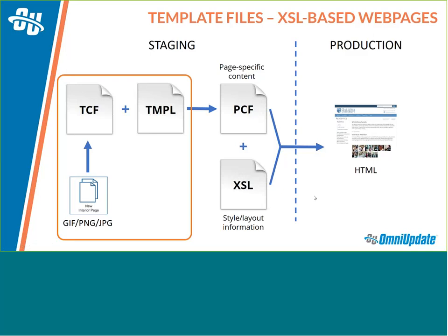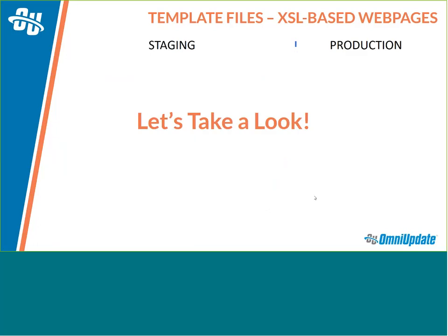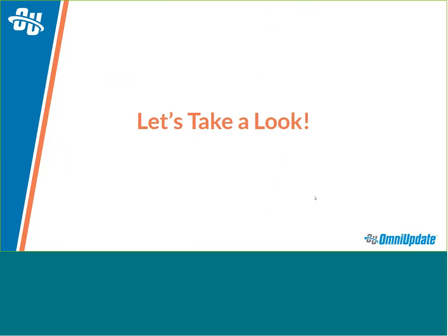If there's one thing to take away from this Training Tuesday, just understand that the three files — the image, the TCF, and the TMPL — are all just generating a file inside of OU Campus. That's what we use to make more files inside the system. And that file can be anything: something simple, or the starting of a new web page that then uses XSL and other things to move forward. Let's go ahead and take a look at how this all works inside of OU Campus.